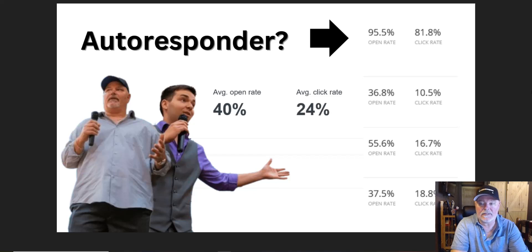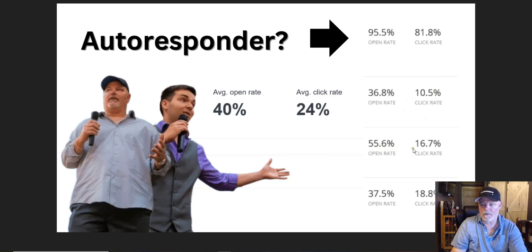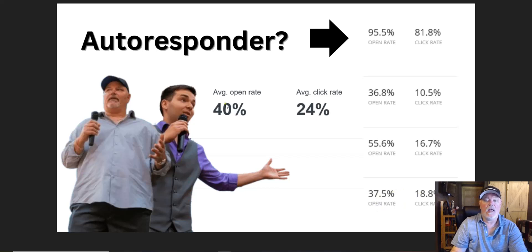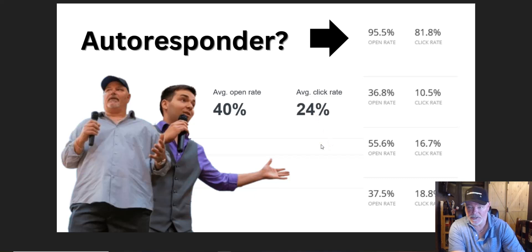On the screen here you can see some open rates and click-through rates: 95.5%, 81.8%, 36.8%, 10.5%, 55.6% open rate with 16.7% click-through rate, 37.5% open rate with 18.8% click rate. The average open rate is 40% and the average click rate is 24%. That is on our 30-day email series.